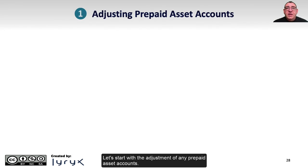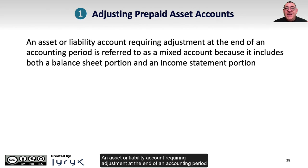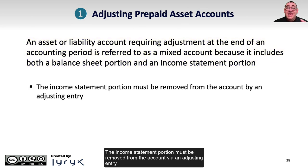Let's start with the adjustment of prepaid asset accounts. A prepaid asset is the result of the company paying an expenditure in advance, and will be expensed over more than one accounting period. An asset or liability account requiring adjustment at the end of an accounting period is referred to as a mixed account because it includes both a balance sheet portion and an income statement portion. The income statement portion must be removed from the account via an adjusting entry.